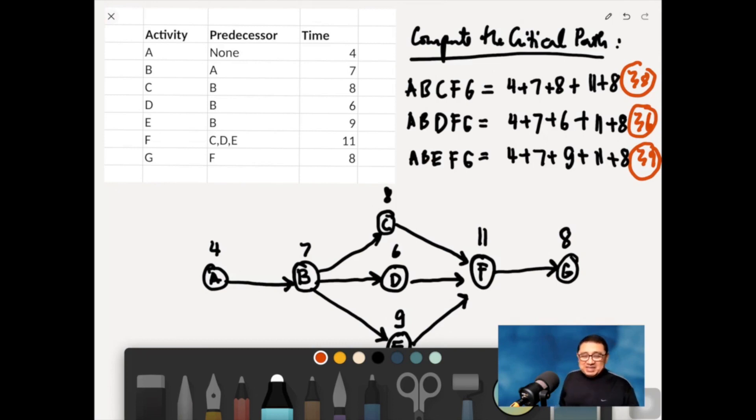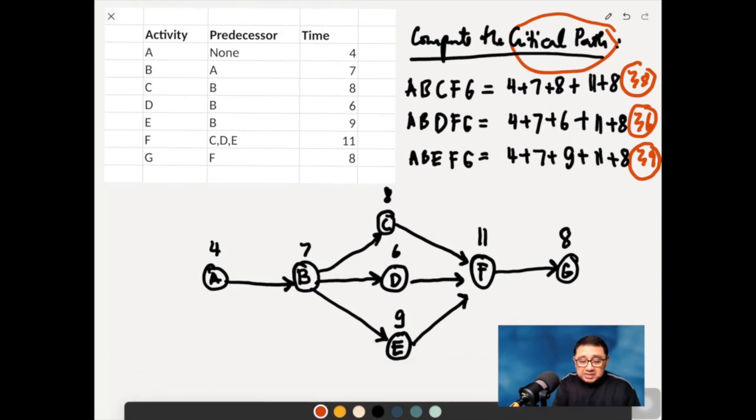So as we said, the critical path is actually the longest path. So why is it critical? Technically speaking, it's the longest line. And what happens there is that these activities, so let's draw this.